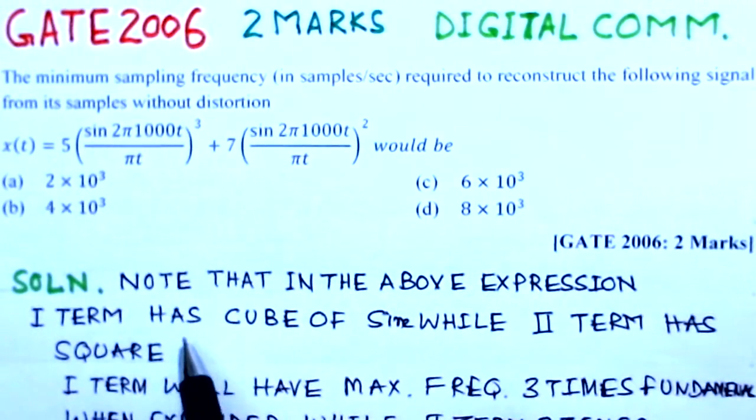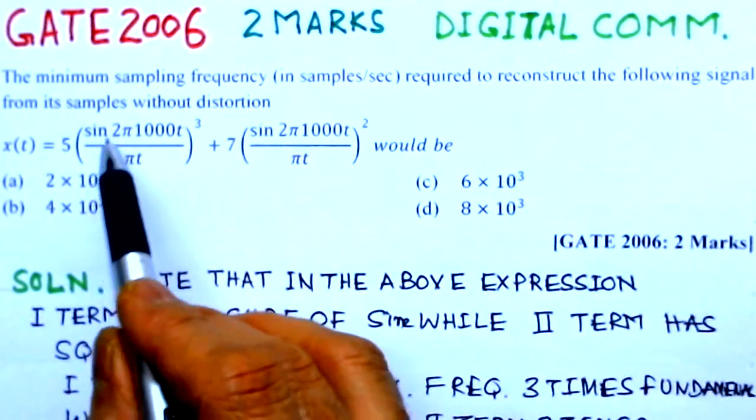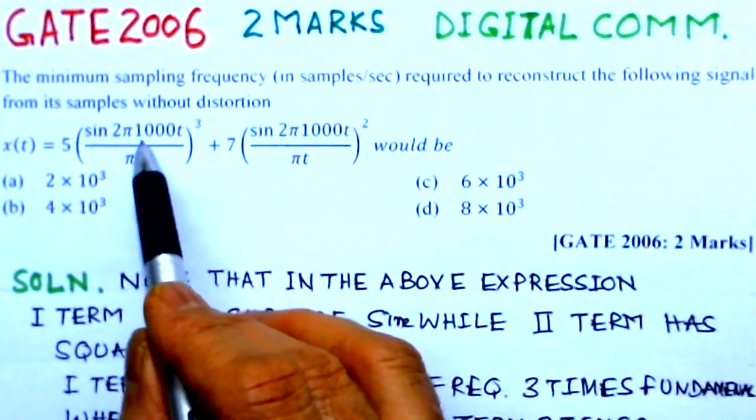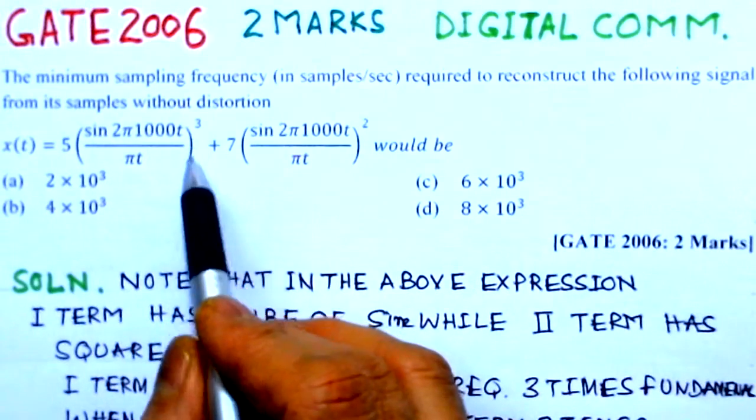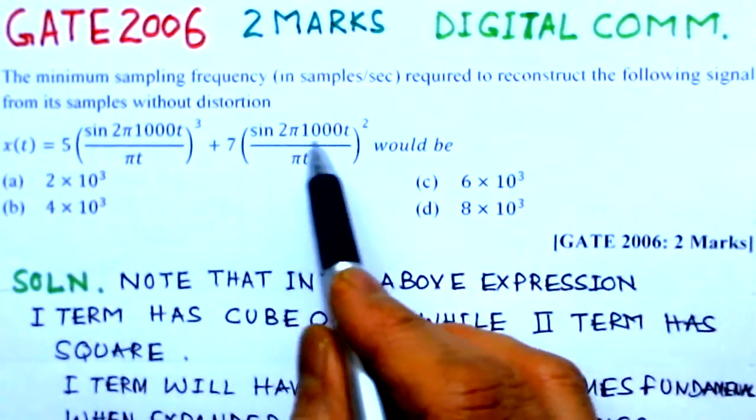Okay, so in this problem we observe that the first term here, sin(2π1000t), is a cube of this term. The second term is a square of this sin term.